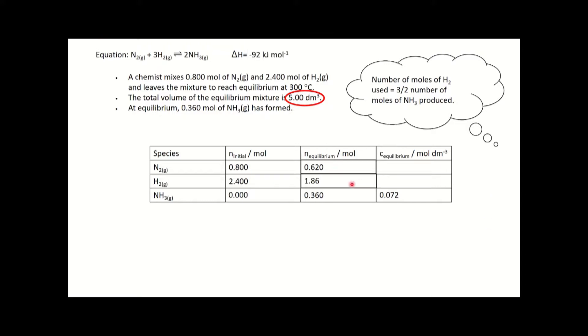One thing left to do - we now have number of moles and volume. We divide both numbers by five and end up with 0.124 and 0.372 moles per decimeter cubed for nitrogen and hydrogen, respectively.